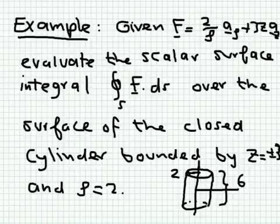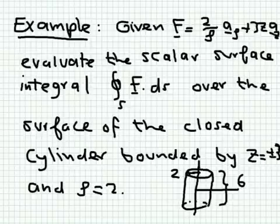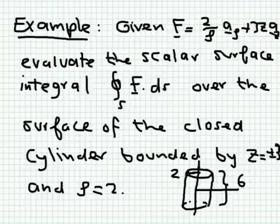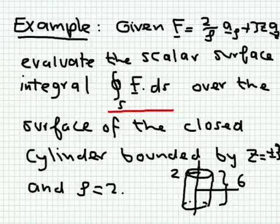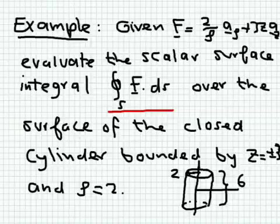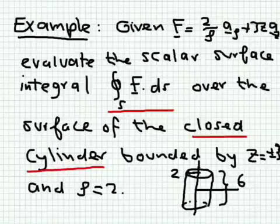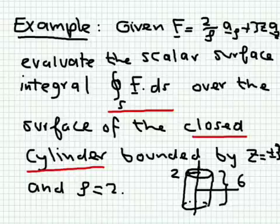To explain surface integrals through examples: we have a vector function F — think of it as current density in amperes per meter squared — and we want to determine the total current flowing out from a closed surface. A closed surface is one that completely encloses a volume. For a closed cylinder, this means it is a complete cylinder that includes the bottom base, the top base, and the side wall.